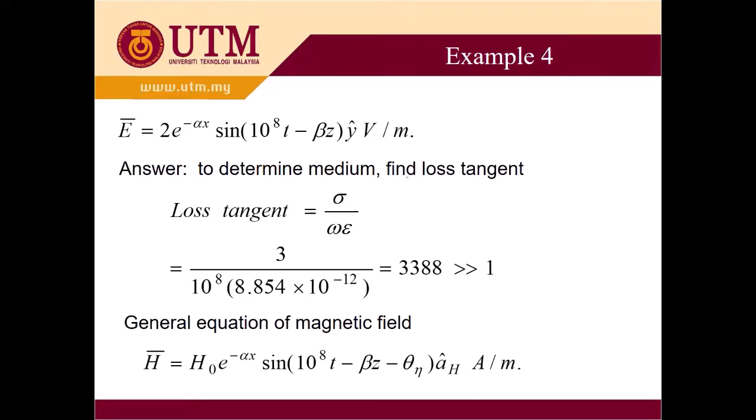To determine the loss tangent of the medium, we use this formula. Loss tangent equal to sigma divided by omega epsilon equal to 3 divided by 10^8 multiplied by epsilon. Epsilon equal to epsilon naught because given that epsilon_r is equal to 1. In your calculator, this is basically constant 32.